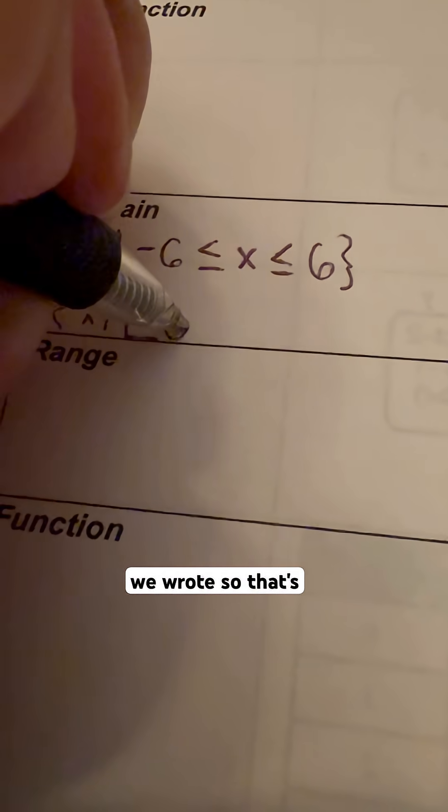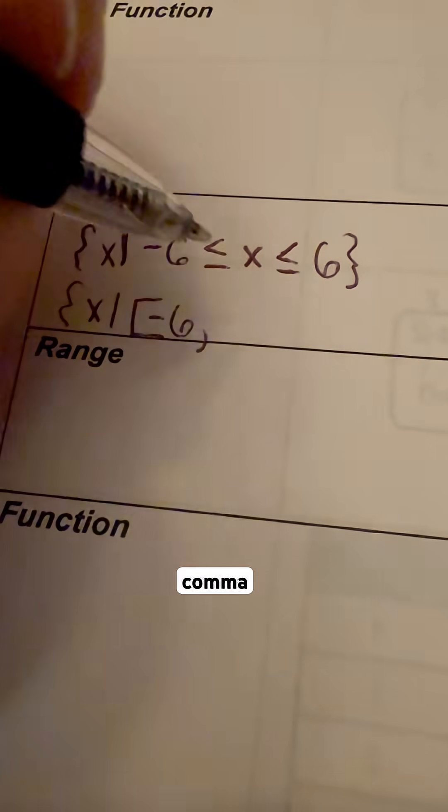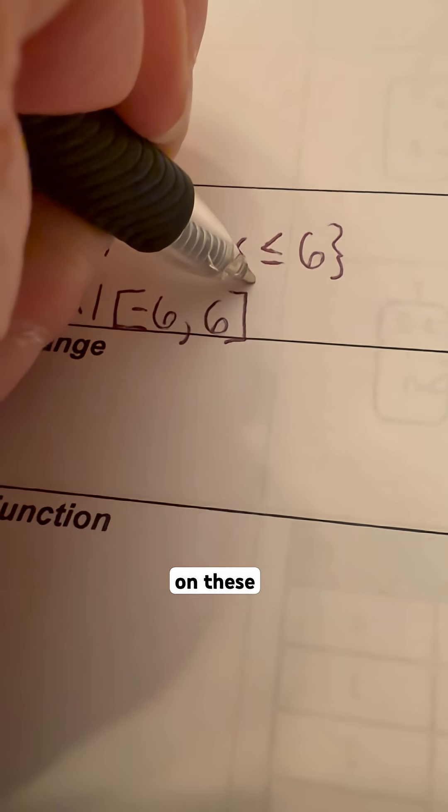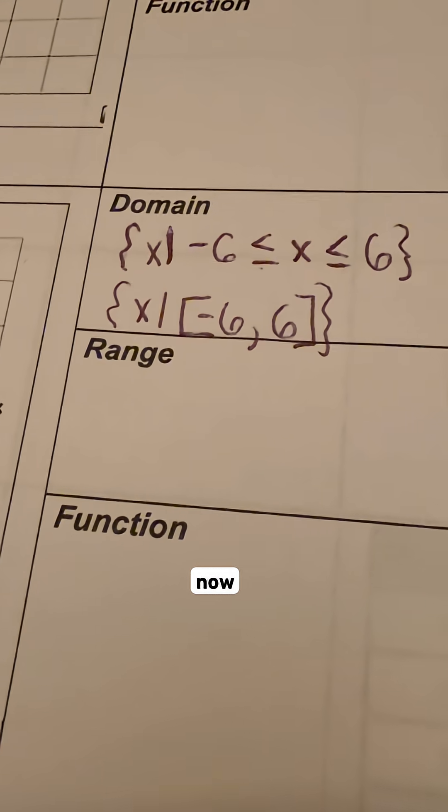We do the lower number first, the first number that we wrote, so that's negative 6, comma, and then the upper number, which is a 6. And again, because there are lines underneath both of these, we use hard brackets on these, and then we just fill in that part.